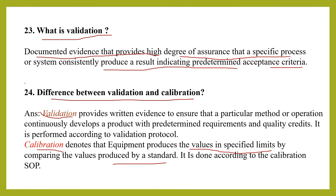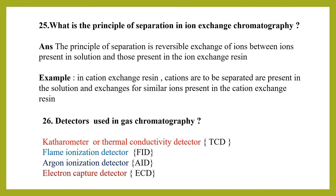What is the principle of separation in ion exchange chromatography? The principle is the reversible exchange of ions present in the solution with those present in the ion exchange resin. For example, in cation exchange resin, cations to be separated in solution exchange for similar ions in the resin; similarly, in anion exchange resin, anions in solution exchange for similar ions in the anion exchange resin.